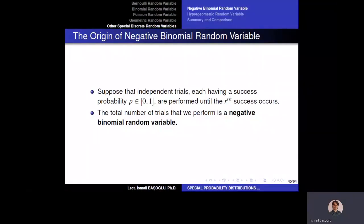The next spatial discrete random variable we are going to analyze is the negative binomial random variable. When you look at the name, you might think this random variable is somehow related to the binomial, however it is not that related. There is a relationship between the binomial random variable and negative binomial random variable, but not as strong as the relationship between the geometric random variable and negative binomial random variable.